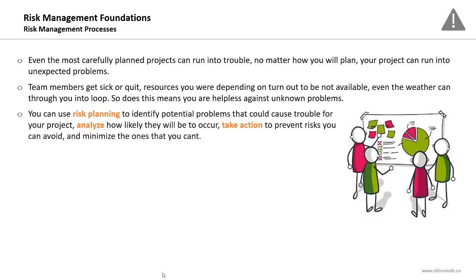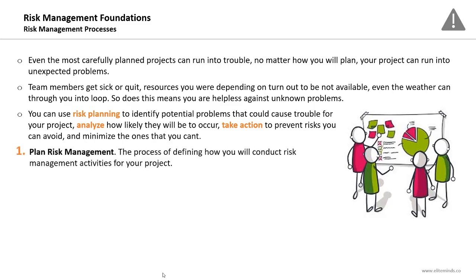The risk management activities typically start with risk planning to identify potential problems that could cause trouble for your project. Then we perform qualitative and quantitative risk analysis, and then we take action — we plan responses to prevent the identified risks you can avoid and minimize the ones that you can't.